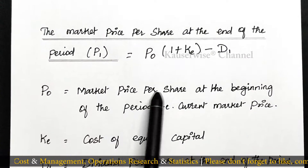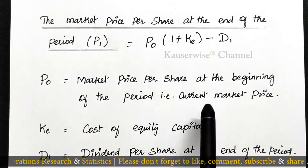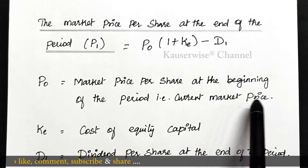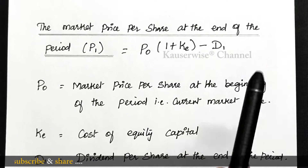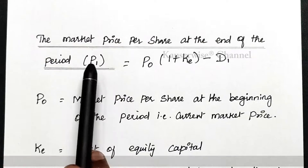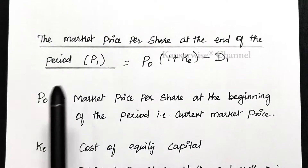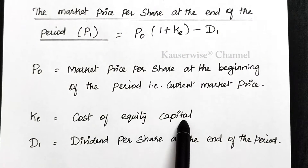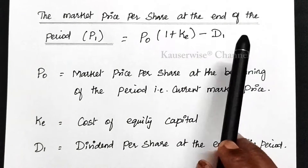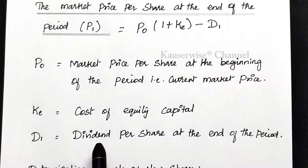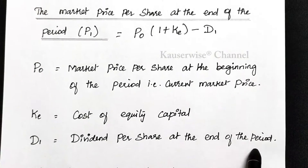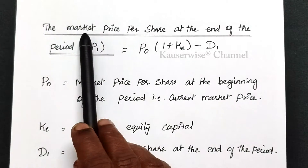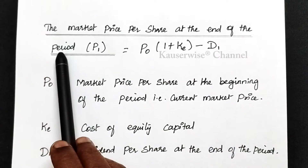P0 means the current market price per share at the beginning of the period, and it will be given in the problem. We are going to find out P1, the market price per share at the end of the period. KE stands for cost of equity capital, and D1 stands for dividend per share at the end of the period. These are the components of the formula used to find P1.